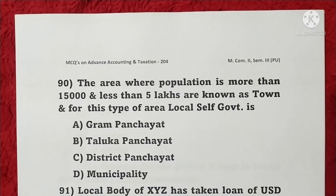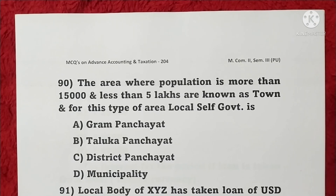Question 90: The area where population is more than fifteen thousand and less than five lakhs is known as a town, and for this type of area in India the local self government is a municipality — option D is correct.